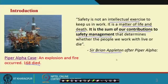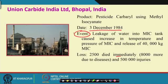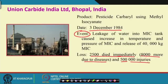There are many such accidents that have happened. You all know Union Carbide India Limited, Bhopal — the case of 3rd December 1984. The event was leakage of water into an MIC tank, which caused an increase in temperature and pressure and the release of 40,000 kg of MIC. The immediate loss was 2,500 people died immediately, 8,000 more died due to diseases, and 500,000 injuries. Even today the effects are still present.